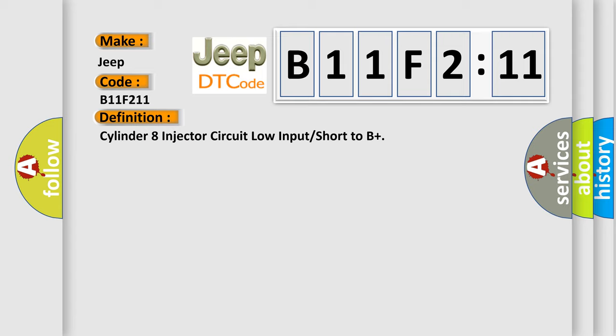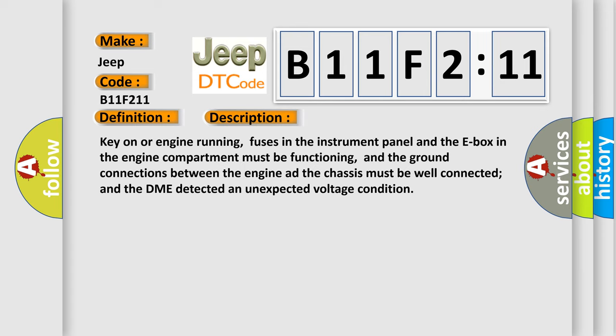And now this is a short description of this DTC code. Key on or engine running, fuses in the instrument panel and the E-box in the engine compartment must be functioning, and the ground connections between the engine and the chassis must be well connected. The DME detected an unexpected voltage condition.